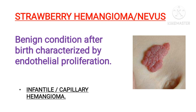Next is strawberry hemangioma or nevus, most commonly seen in infants — the condition is infantile or capillary hemangioma. It is a benign tumor present after birth, caused by proliferation of endothelial cells, giving the appearance of a strawberry. This capillary hemangioma may occur in skin, subcutaneous tissue, or mucous membranes of oral cavities and lips, as well as in the spleen, kidneys, and liver.